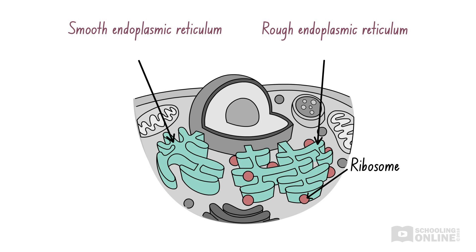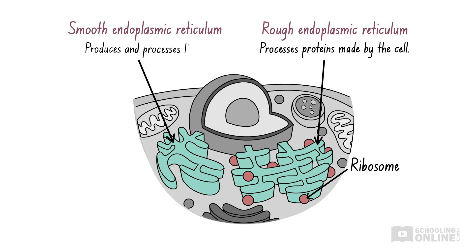Now, the rough endoplasmic reticulum has ribosomes attached to its surface. It plays a major role in processing proteins made by the cell. In contrast, the smooth endoplasmic reticulum has no ribosomes attached to its surface. It is responsible for producing and processing lipids, which are essential for membrane production and repair.